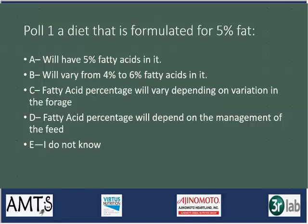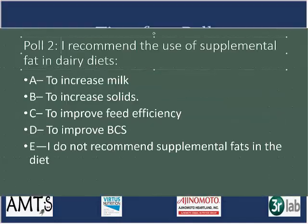I am going to conduct a quick poll. Poll one: a diet formulated for 5% fat — A) will have 5% fatty acids; B) will vary from 4% to 6% fatty acids; C) fatty acid percent will vary depending on the formulation; D) fatty acid percentage will depend on the management of the feed; or E) I do not know.